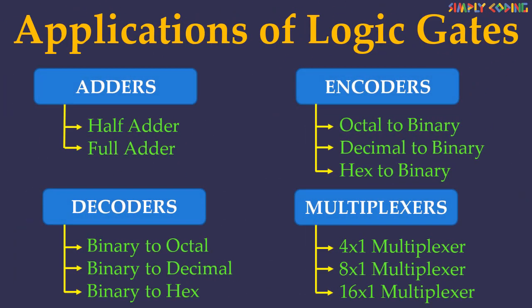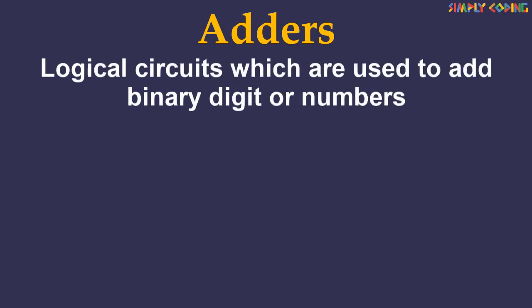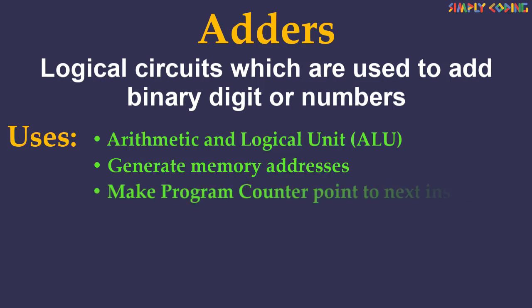Hello. In this video we are going to look at various applications of logic gates. Let's start with adders. Adders are logical circuits which are used to add binary digits or numbers. They are used in computers or microprocessors in the arithmetic and logical unit to add binary numbers. They are also used to generate memory addresses inside a computer or to make the program counter point to the next instruction.